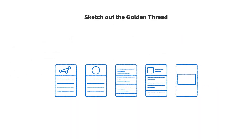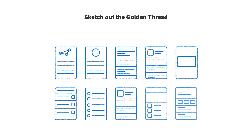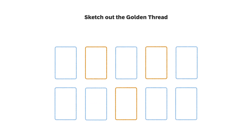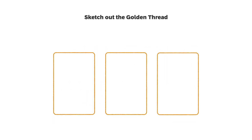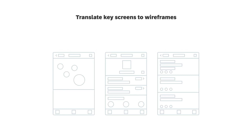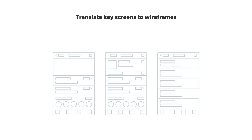Step two: sketch and wireframe your key screens. Once you have an overall view of the general application, you can begin sketching screens or wireframes of the app. It's important to consider both user and business needs and to provide the most important information for users to see and access quickly. The goal of sketching is to refine each screen to focus on the essential information defined by the user and the product requirements. It may take several rounds of design iteration and feedback before these wireframes are complete.